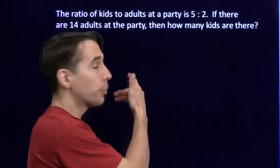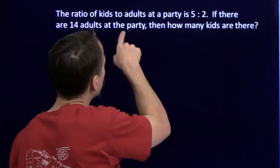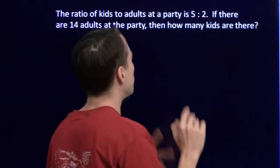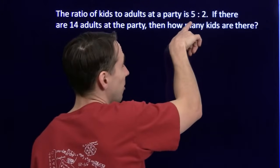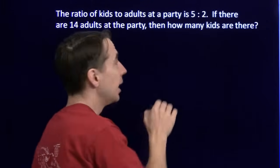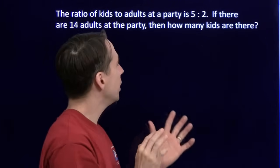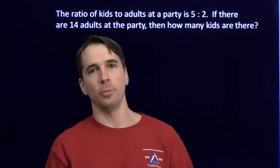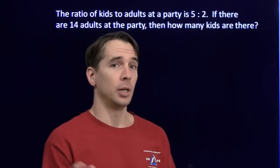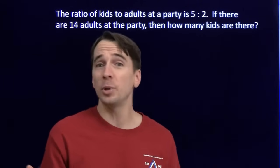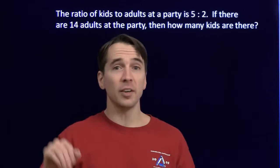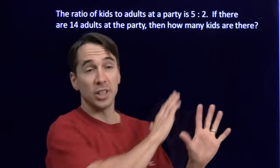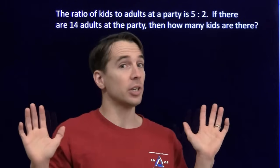I'm going to explain what a ratio is with a problem. The ratio of kids to adults at a party is 5 to 2. What that ratio means is that for every 5 kids at the party, there are 2 adults. It doesn't tell us how many people are at the party, how many kids there are, or how many adults there are. It just tells us that for every 5 kids there are 2 adults. We can put everyone in groups, and each group will have 5 kids and 2 adults. It doesn't tell us how many groups there are.